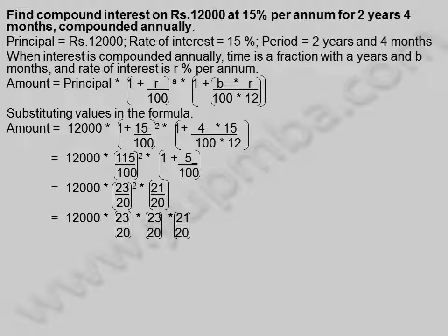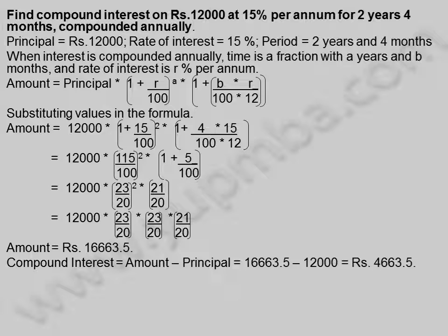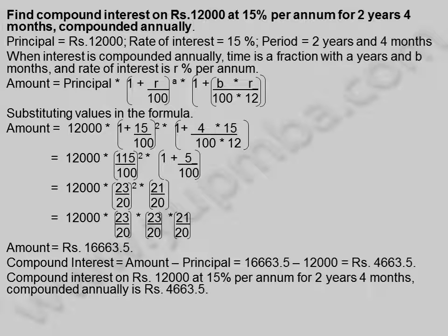Amount = 12,000 × (23/20) × (23/20) × (21/20) = 16,663.5 rupees. Compound interest = Amount − Principal = 16,663.5 − 12,000 = 4,663.5 rupees. Compound interest on 12,000 rupees at 15% per annum for two years four months compounded annually is 4,663.5 rupees.